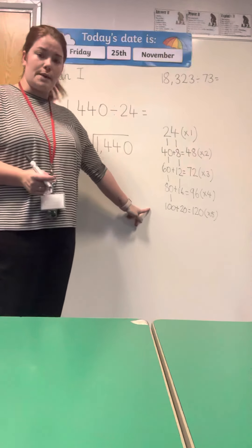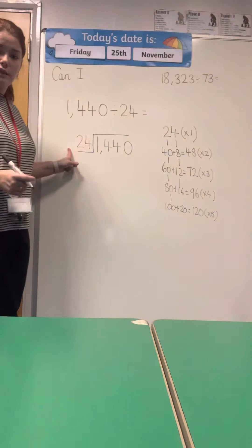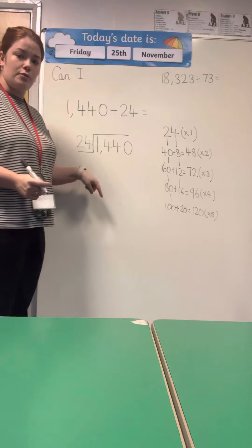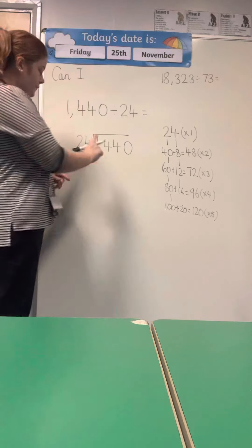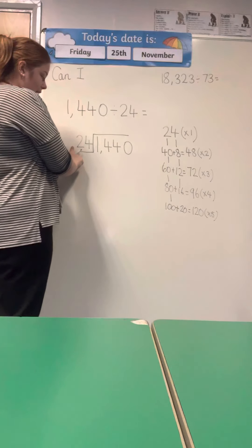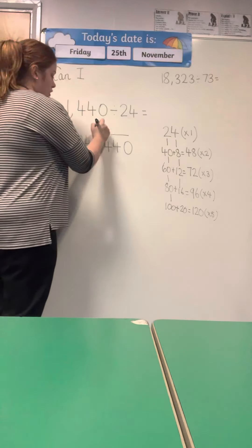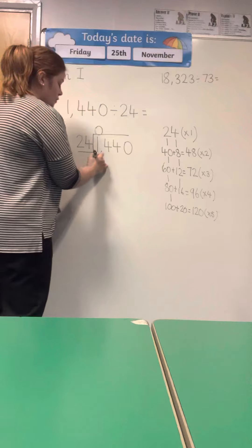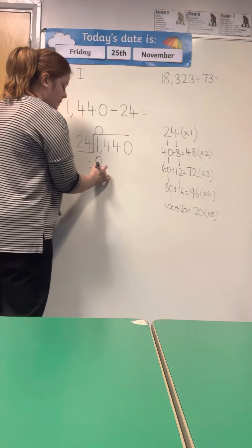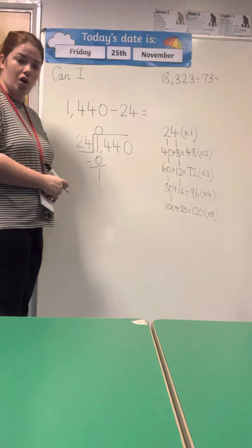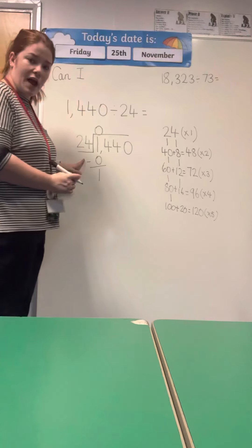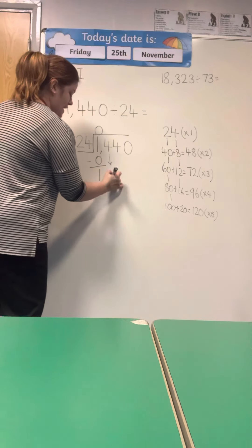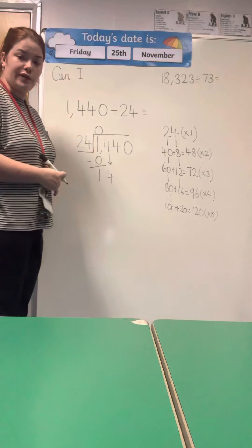Now I've worked out my multiples of 24, I can come back to my equation. We're going to use: divide, subtract, bring it on down, bring it on back. The first thing I need to look at is how many groups of 24 go into 1. I know that's going to be 0 — that's my divide. I then subtract nothing, so I'm still left with 1. Now it's bring it on down, and I bring down the next number, which is 4.